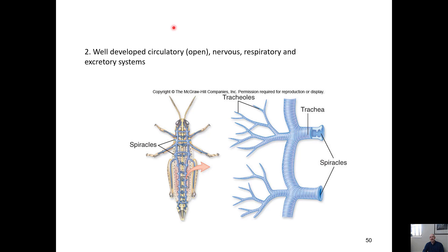Arthropods also have well-developed open circulatory systems, a well-developed nervous system with highly developed eyes and a brain, and highly developed respiratory systems. They have trachea that branch into tracheoles, and the openings on the outside of the insect are called spiracles — don't confuse those with spicules in sponges. Spiracles are the openings to the tracheal system. Interestingly, if you spray plants with soapy water in organic gardening, it can block the spiracles and cause insects to suffocate.